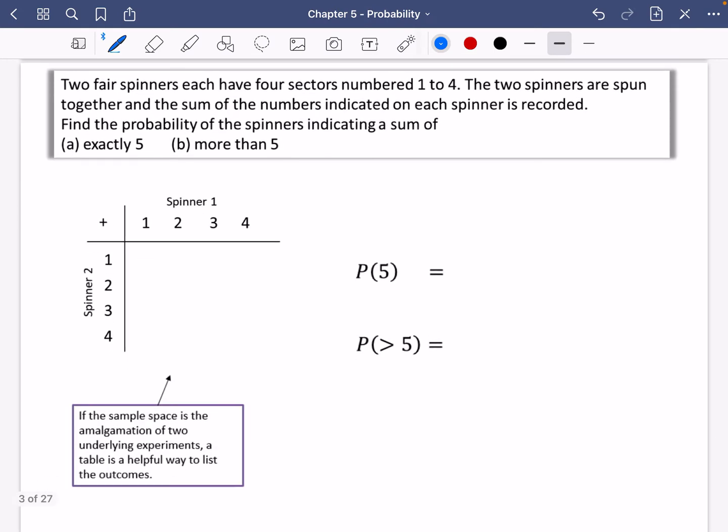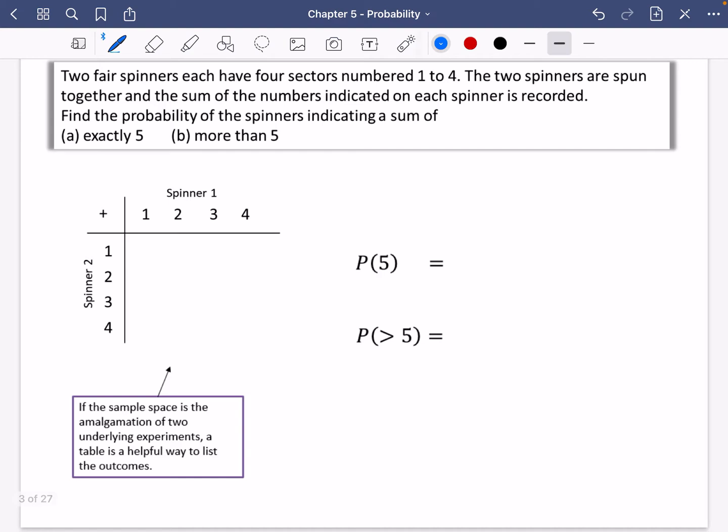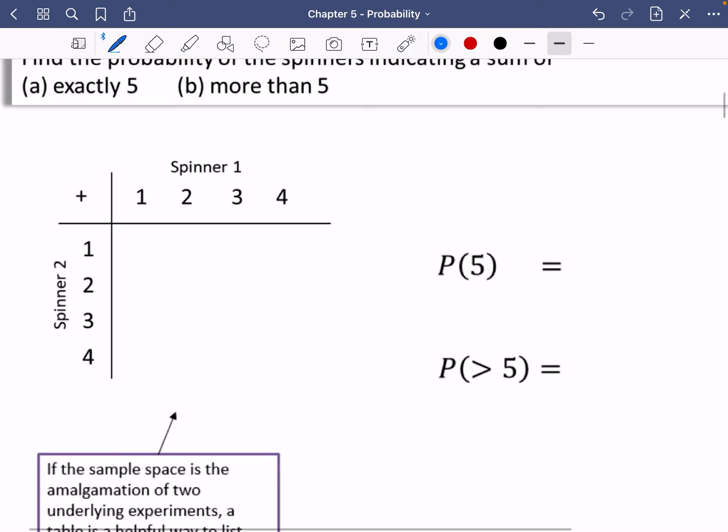Let's have a look at a slightly different kind of question here. Two fair spinners each have four sectors numbered one to four. If they're fair, that must mean there's an equal chance of it being those numbers. The two spinners are spun together and the sum of the numbers indicated on each spinner is recorded. Find the probability of the spinners indicating a sum of exactly five or more than five. If the sample space is the amalgamation of two underlying experiments, a table is a helpful way to list all of the possible outcomes.